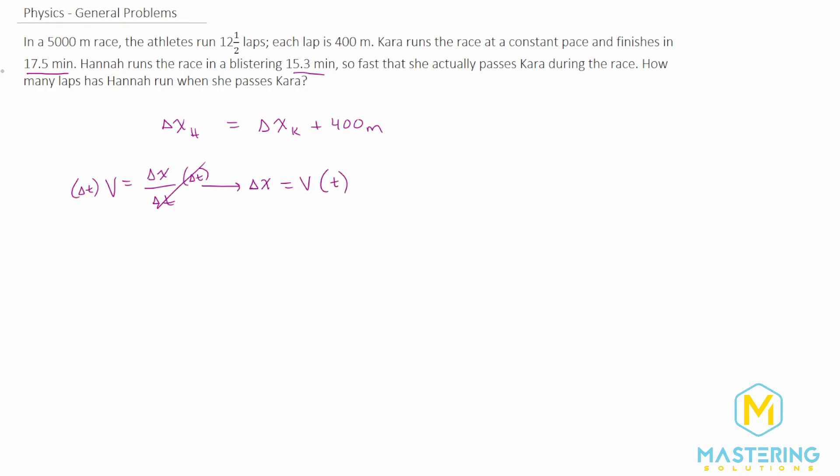So the delta x for Kara is going to be the velocity that Kara ran times the time. The change in x for Hannah is the same thing as the velocity that Hannah ran times the time. So now we can plug these up here and let's write that out.